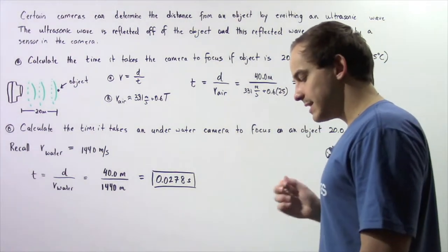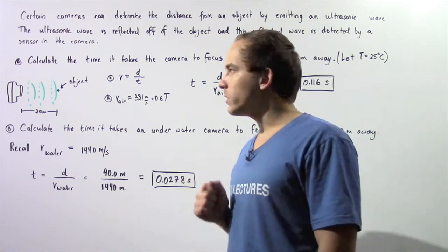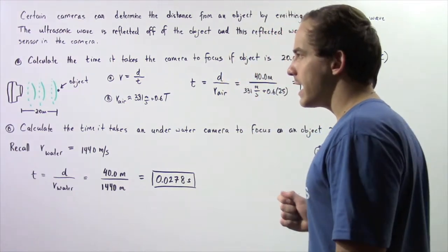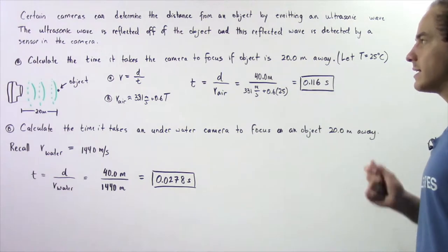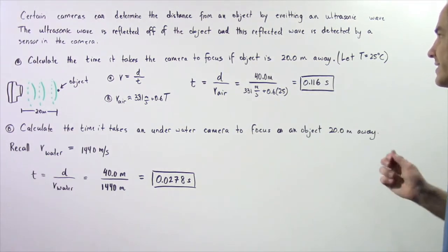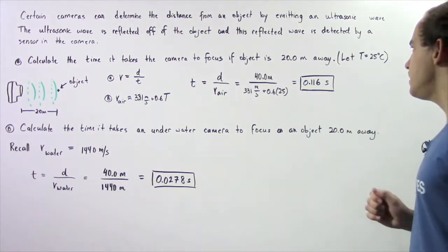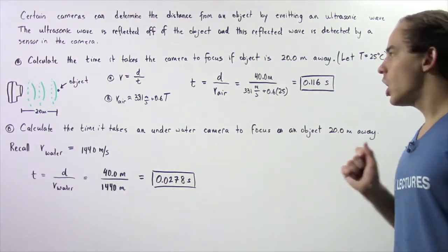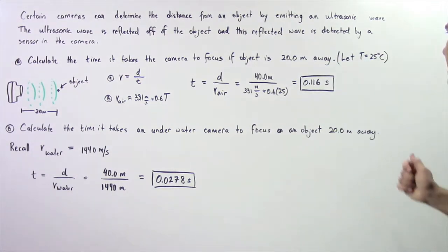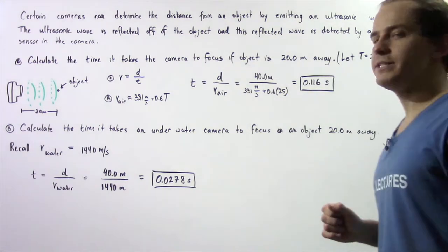This process is known as autofocusing. In part A, calculate the time it takes the camera to focus if the object is 20 meters away, assuming the medium is air and the temperature is 25 degrees Celsius.